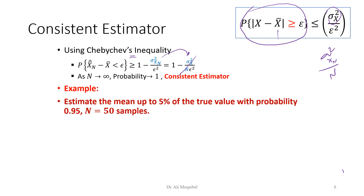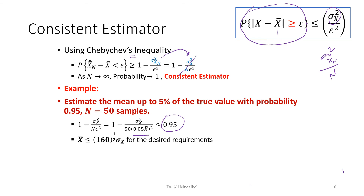Example: estimate the mean up to 5% of the true value with probability 0.95 with n equal to 50 samples. Applying Chebyshev inequality by direct substitution, the probability must be less than or equal to 0.95, where the error is 5% of the true value. Solving this, x-bar must be less than or equal to the square root of 160 times sigma_x — so the condition is satisfied only if this constraint is met.